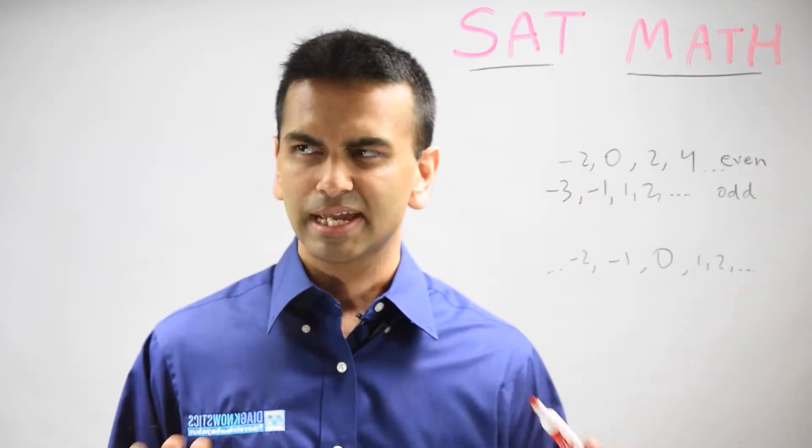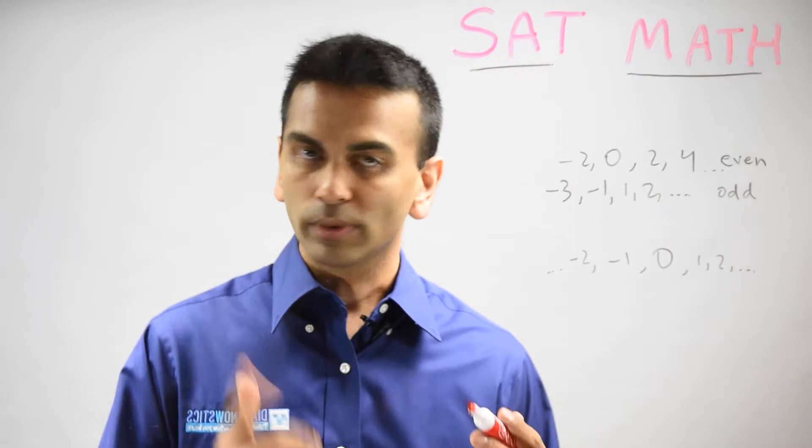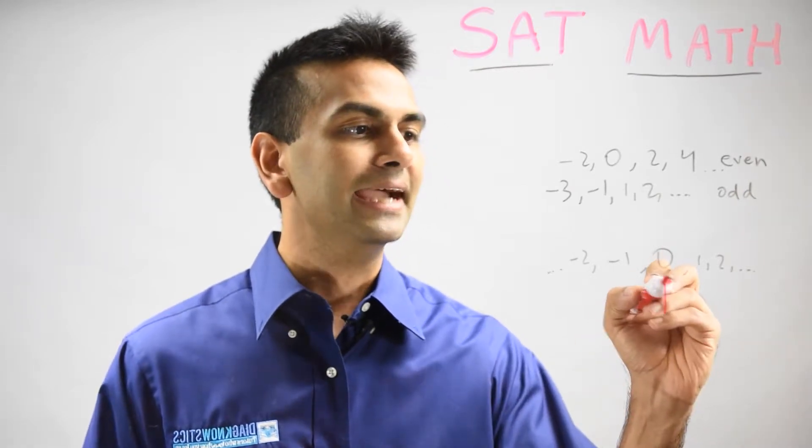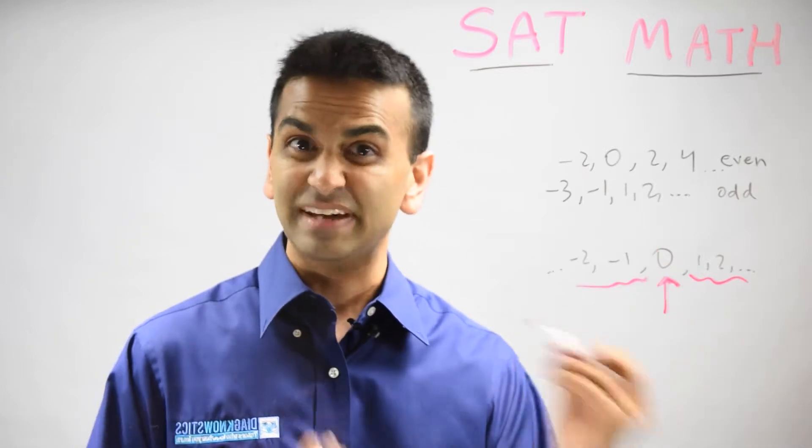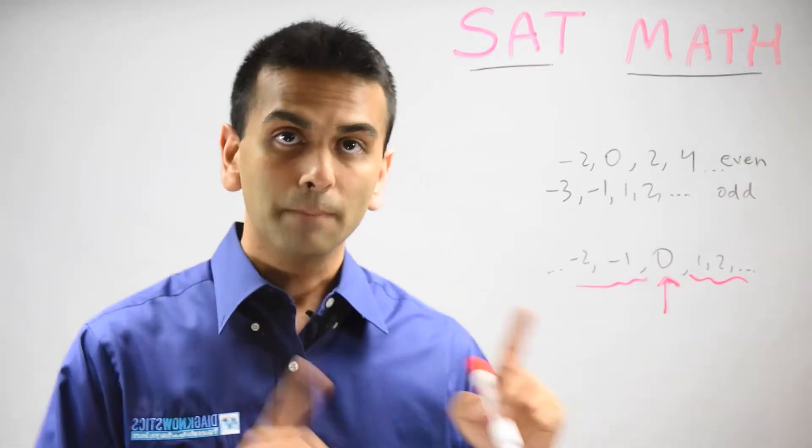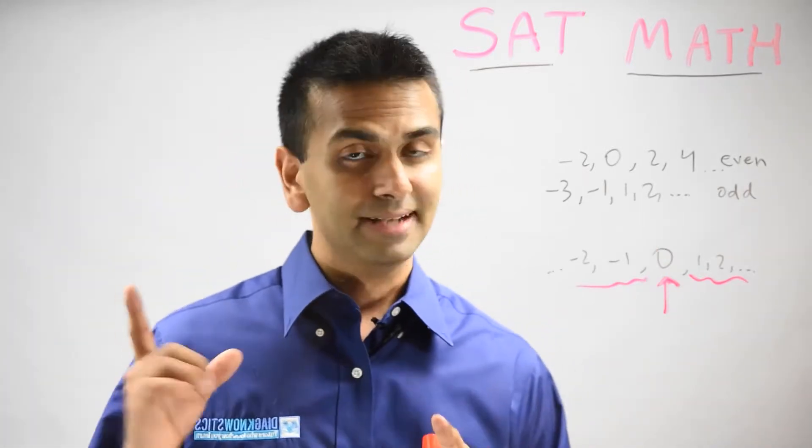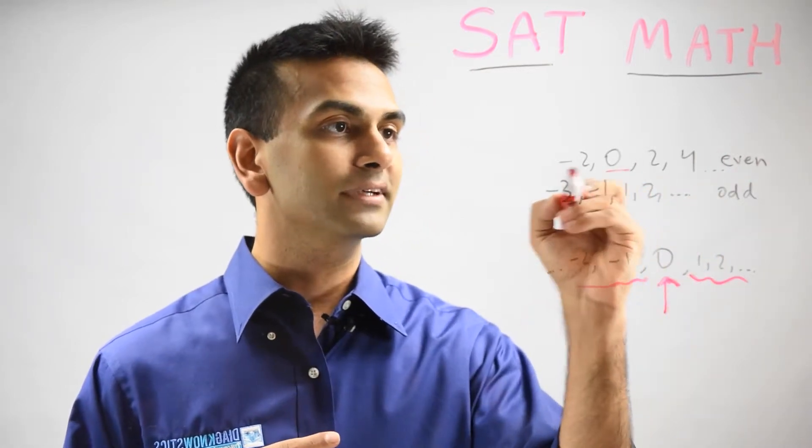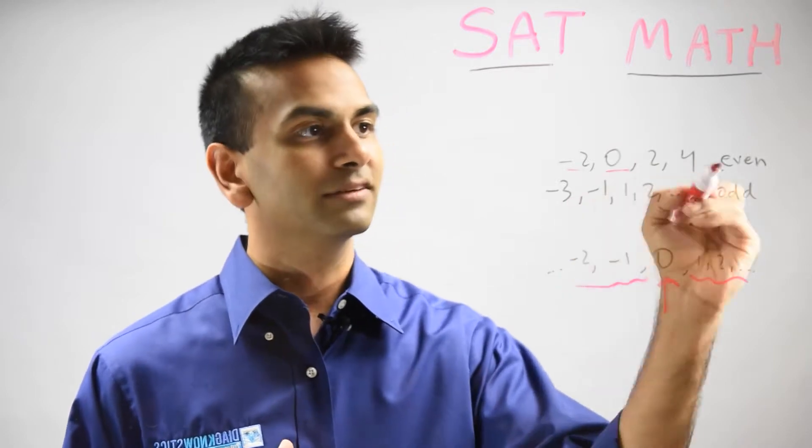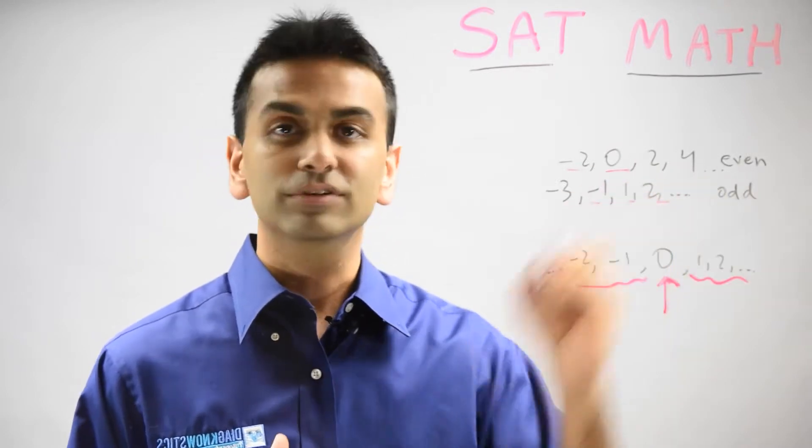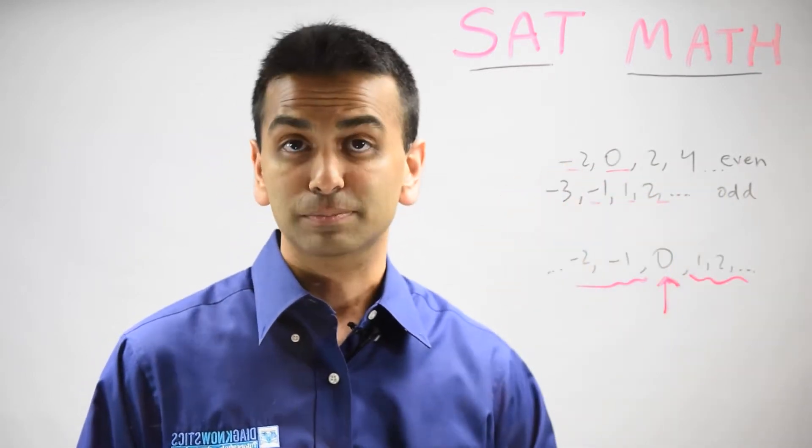Speaking of positives and negatives, is zero positive or negative? Well, the answer is that it's actually neither. It's exactly between the positives and negatives, so we define it as neither positive nor negative. But is it even or odd? Not neither. The evens jump by 2, so do the odds. But if you look at it all out, 0 is even but it's neither positive nor negative.